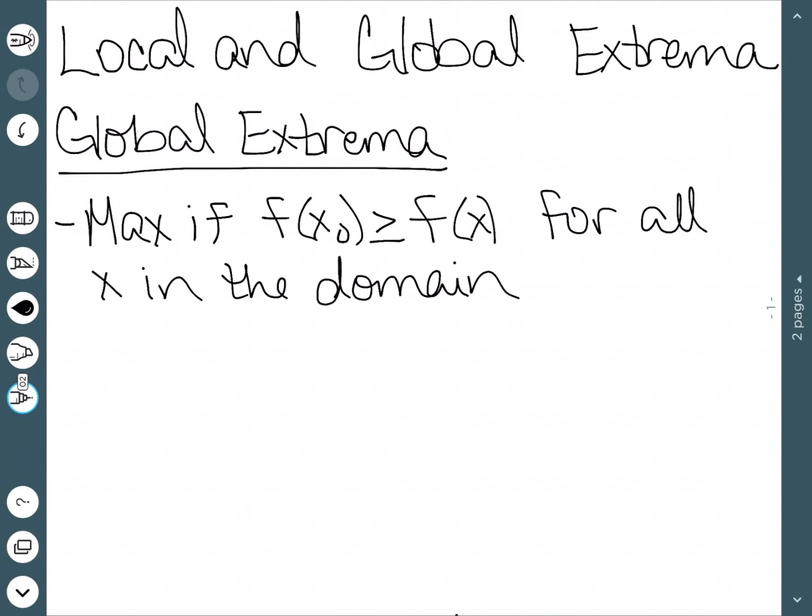A global maximum occurs if f(x₀) ≥ f(x) for all x in the domain. It is the absolute highest point of your function. You'll notice that is greater than or equal to - it is possible to have two global maximums that occur at the same point.